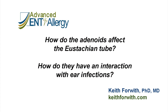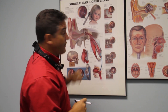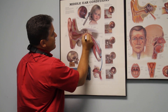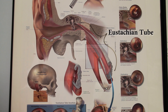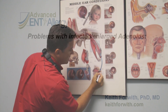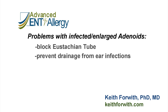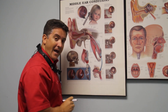How do the adenoids affect the eustachian tube and how do they interact with ear infections? For kids, if they get fluid in their middle ear during an infection, the way that it would naturally drain is down and out the eustachian tube. But if the adenoids are enlarged where the eustachian tube comes out, that could block the drainage of fluid downstream. So sometimes kids are helped with their ear infections by removal of the adenoids.